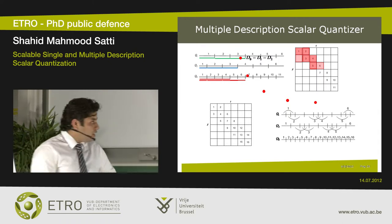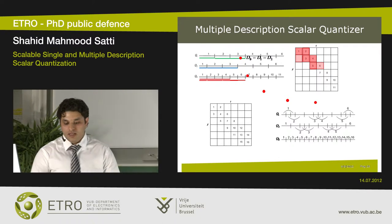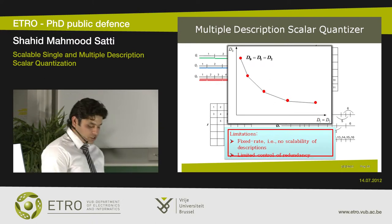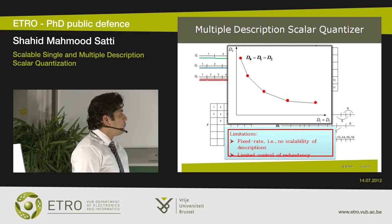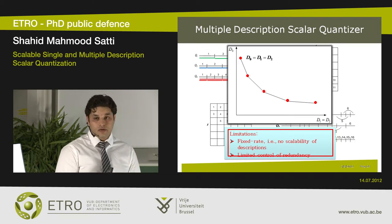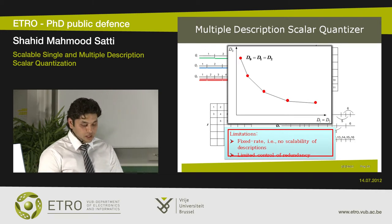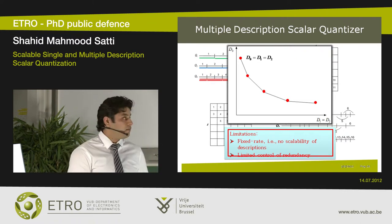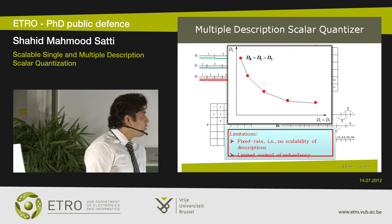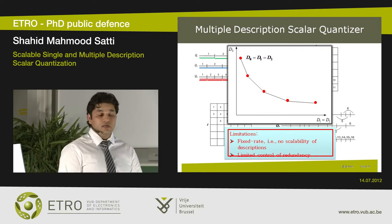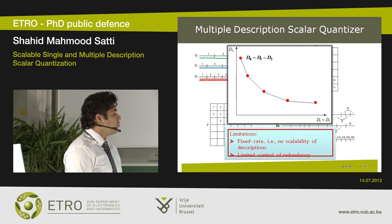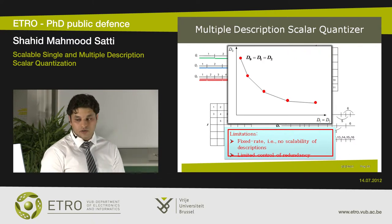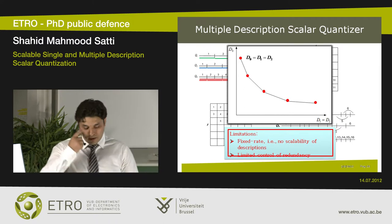So in general, these diagonals are used to vary the redundancy between the two descriptions. Here I've shown a demonstration example where at the top point you have only one diagonal in the index assignment matrix, meaning the two descriptions are completely redundant — so the central distortion and the side distortion are exactly the same. As you increase the number of diagonals, you reduce the redundancy between the two descriptions and reduce the central distortion, but only at the cost of increasing the side distortion. This is correct, but MDSQs have certain limitations.